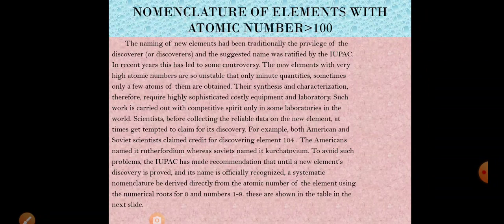Before collecting reliable data on the new element, many scientists get tempted to claim credit for its discovery. For example, both American and Soviet scientists claimed to have discovered element 104 at the same time. The Americans named it Rutherfordium, whereas the Soviet scientists named it Kurchatovium.